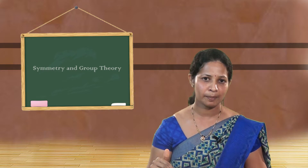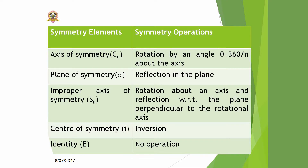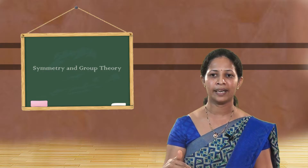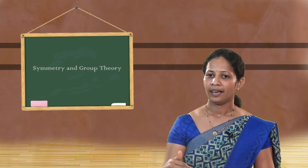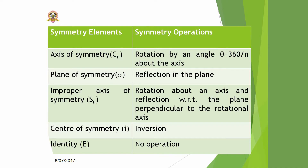The axis of symmetry is denoted as C_N, and it is generated by a rotation operation — specifically, rotation by an angle theta about the axis. The plane of symmetry is denoted as sigma, and it is generated by reflection in the plane. The improper axis of symmetry is denoted S_N, and it involves two operations: rotation followed by reflection — rotation about an axis followed by reflection with respect to a plane perpendicular to that axis.